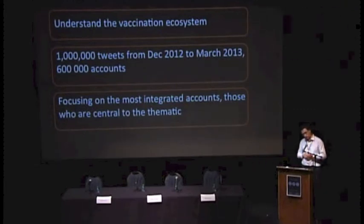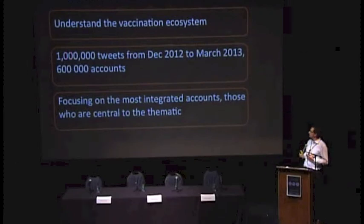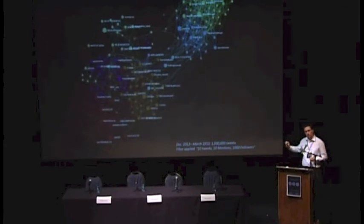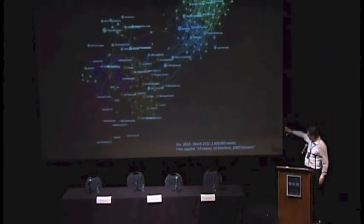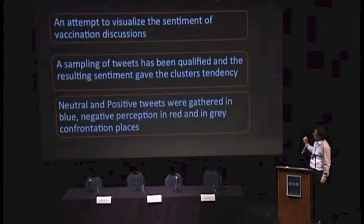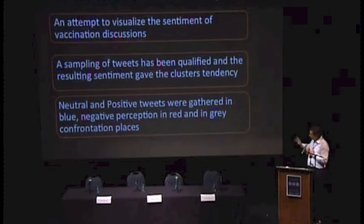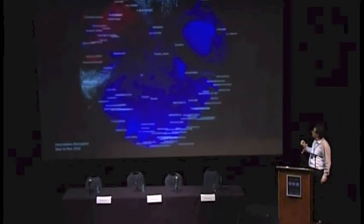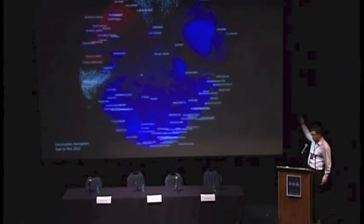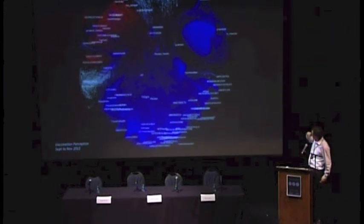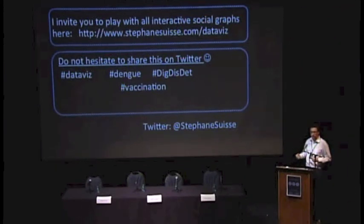Another important topic for us is vaccination and immunization. We are exploring the way we can perceive vaccinations through sentiment analysis. The graph is very bipolar with two poles connected by a small bridge and very few accounts between them — this is very typical of vaccination discussions. We quantify all the tweets coming from the leaders of each cluster. In this representation, blue represents neutral and positive tweets, and red represents negative tweets. In grey is the hottest topic in the UK — the tuberculosis crisis involving badgers. All these graphs are available on our website and are interactive, so you can play with them. Thank you.